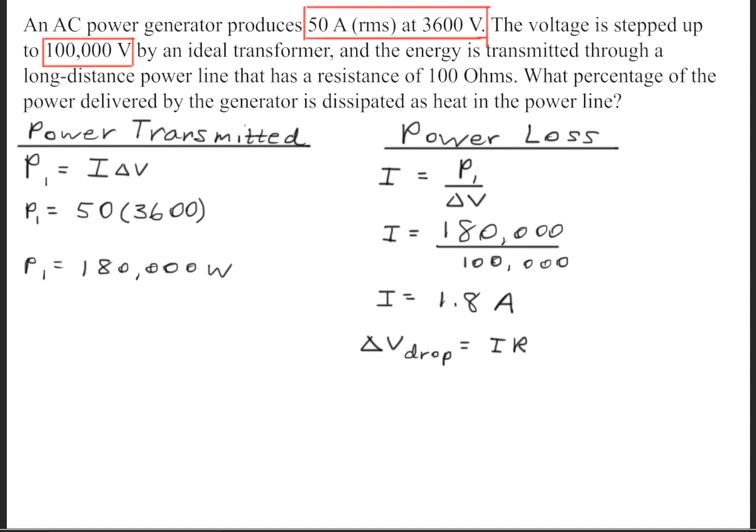Now next, we need to find the voltage drop that occurs from point A to point B as it travels the wire, and we can find that by using Ohm's Law. So we'll plug in 1.8 amps and multiply that by 100 ohms. This will give us a voltage drop of 180 volts.